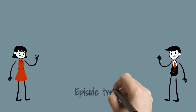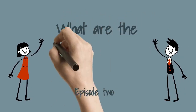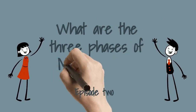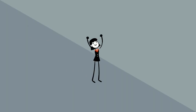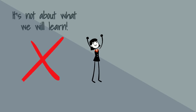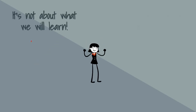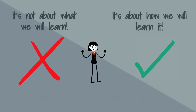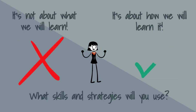Welcome to episode 2, where we will be looking at the three phases of metacognition. In the last episode on metacognition, Jen learned that metacognition was not about what she learned, but about how she learned it.